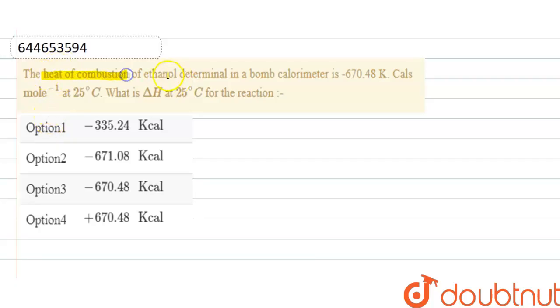The heat of combustion of ethanol determined in a bomb calorimeter is -670.48 kilocalories per mole at 25 degrees Celsius. What is delta H at 25 degrees Celsius for the reaction?